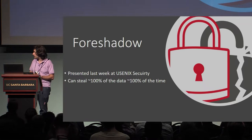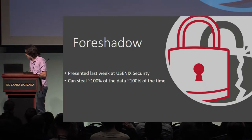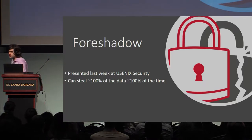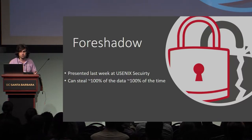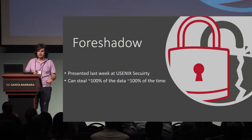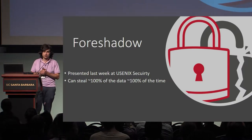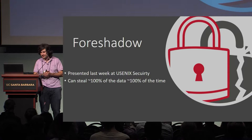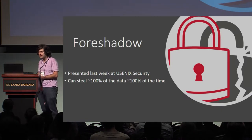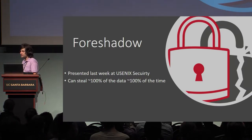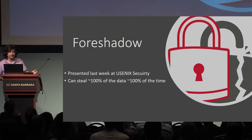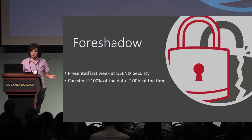Foreshadow is a speculative execution attack against Intel hardware. It breaks protections and security boundaries enforced by virtual memory, has applications to virtual machines — one virtual machine on the cloud can read another virtual machine on the cloud — but it also has implications for SGX. It can basically dump any data located in SGX address space, and we can roughly dump 100% of the data 100% of the time, up to measurement errors.